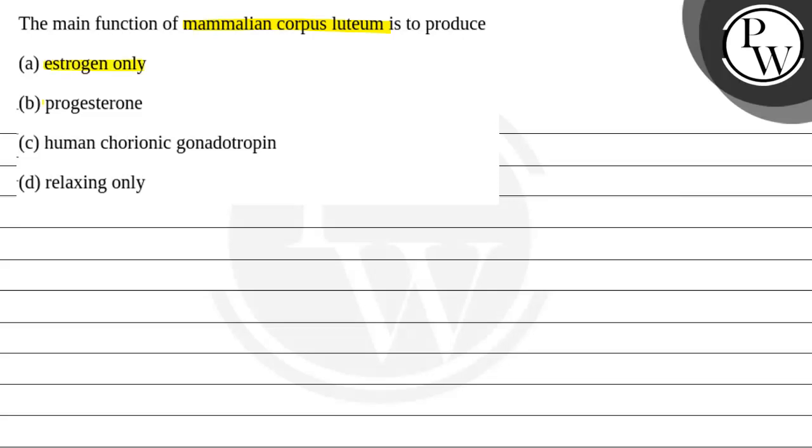Options are estrogen only, progesterone, human chorionic gonadotropin, and relaxin only.